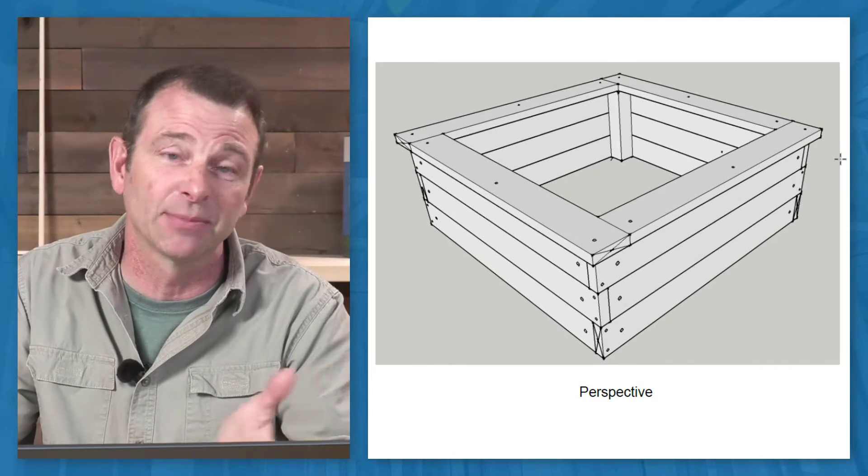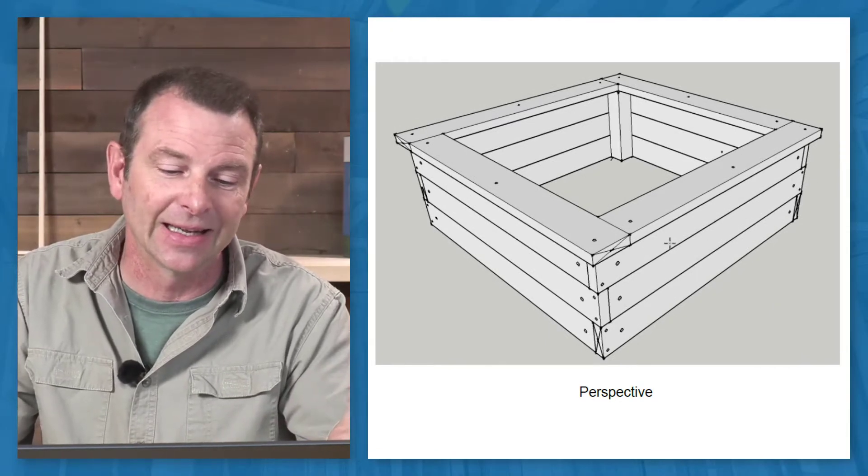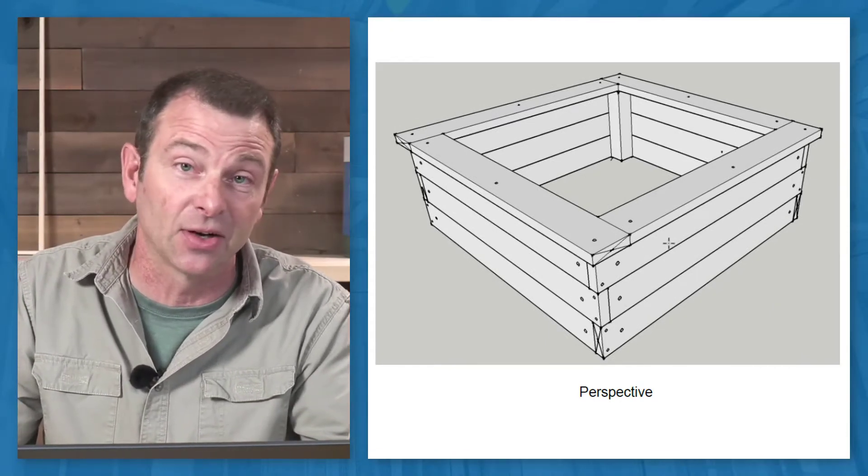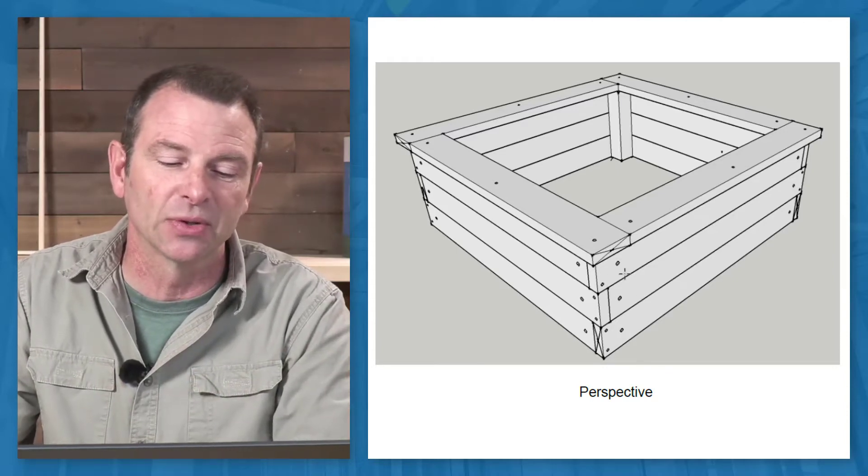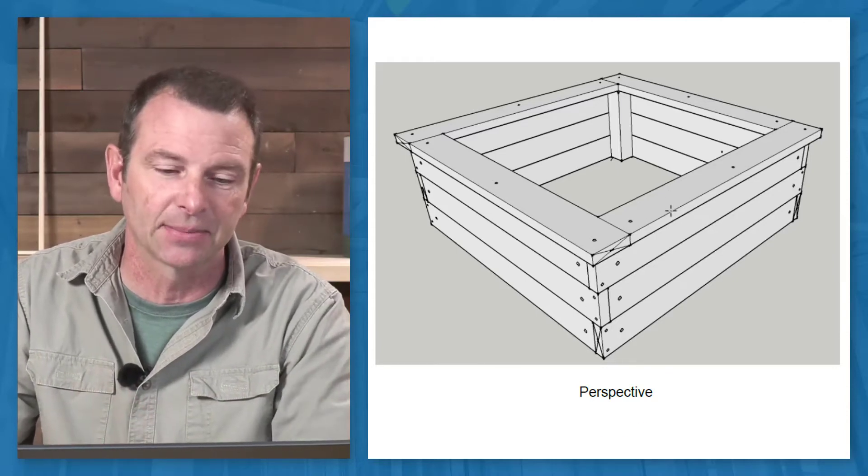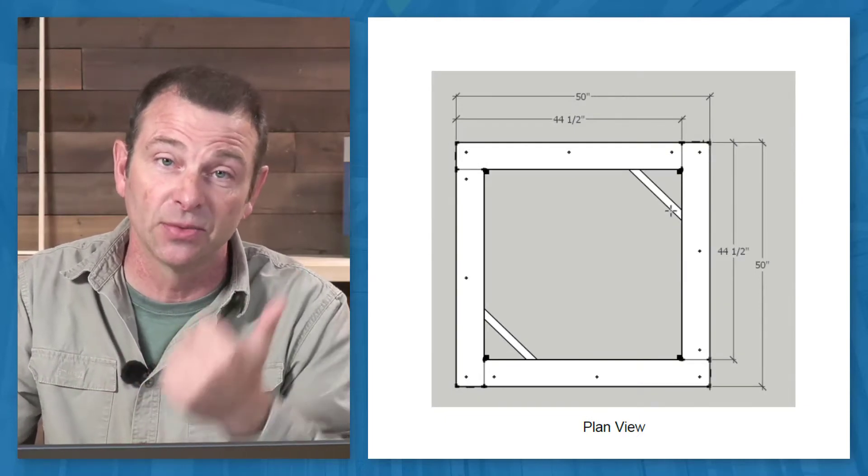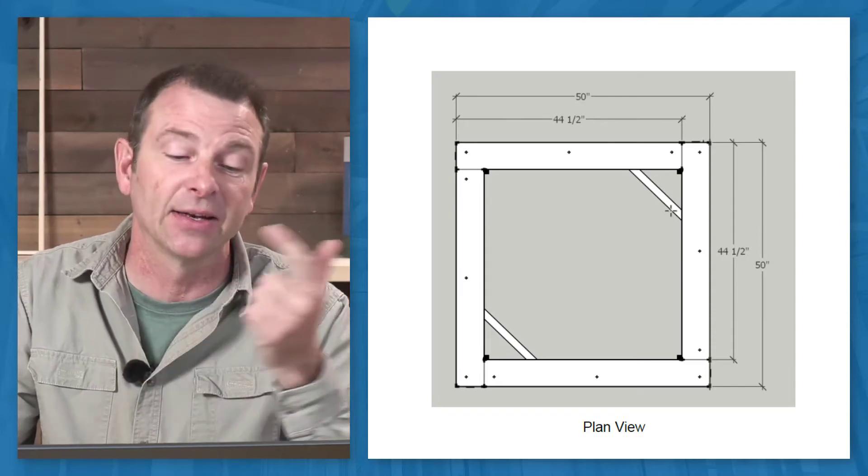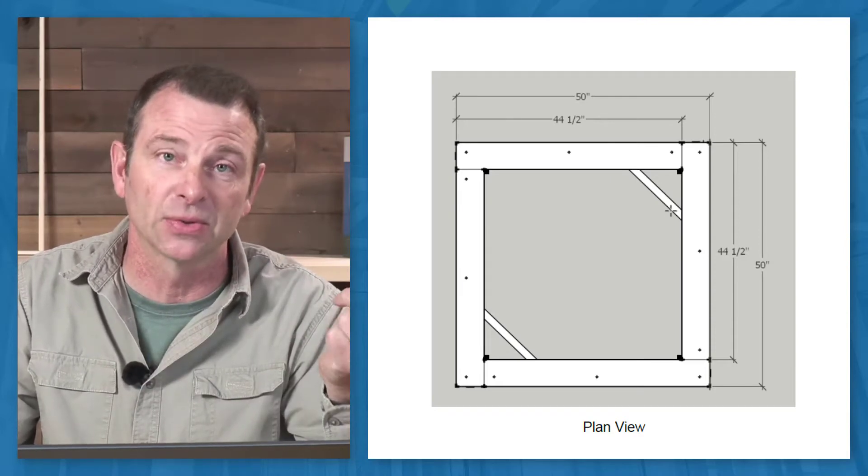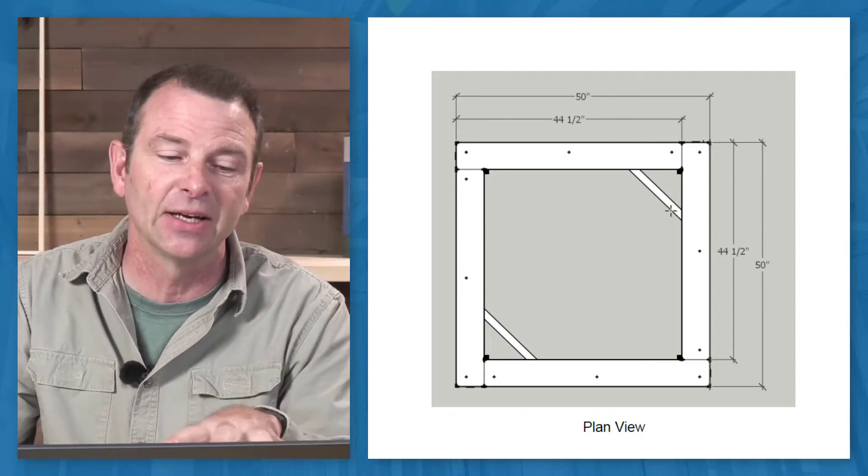As you can see here, this is the perspective view of it. There are no complicated cuts, all squared cuts. It is made with alternating boards on the corners and on the top cap. All you're using to make these are two by six boards, whether that's treated or untreated, and also a four by four post. So you're looking at it in plan here.